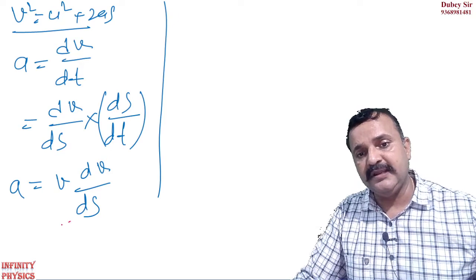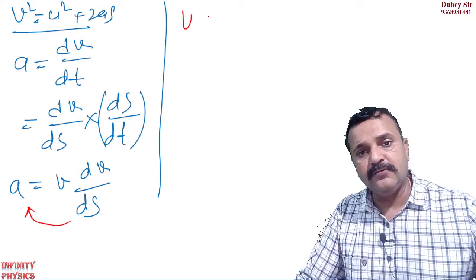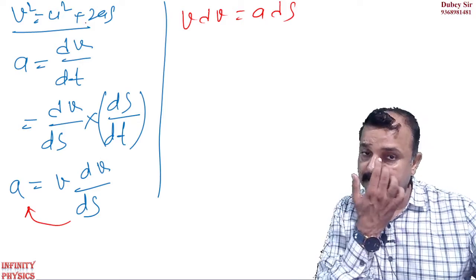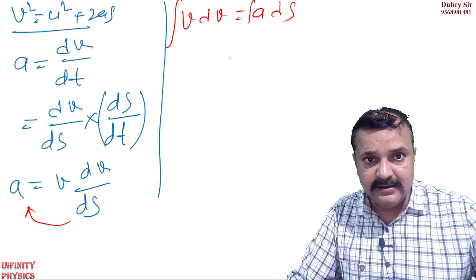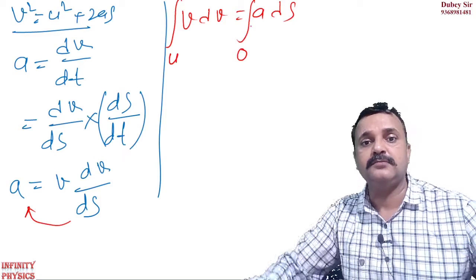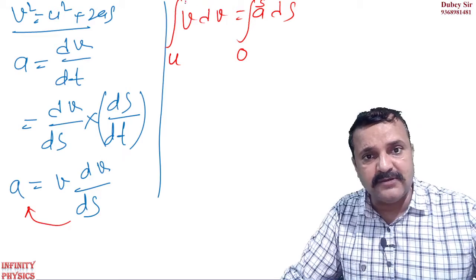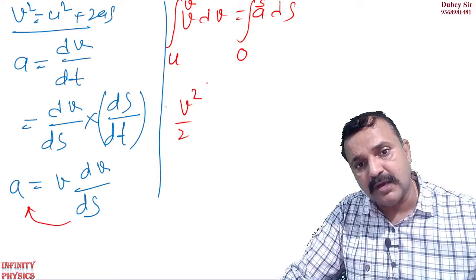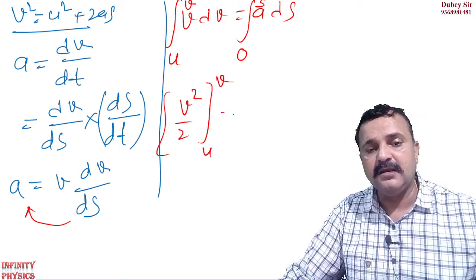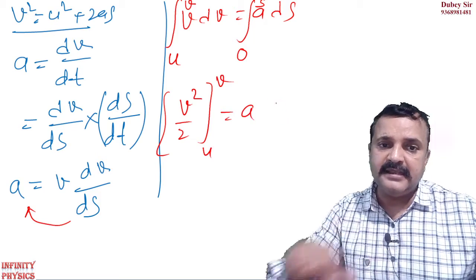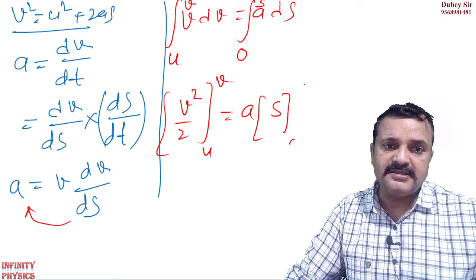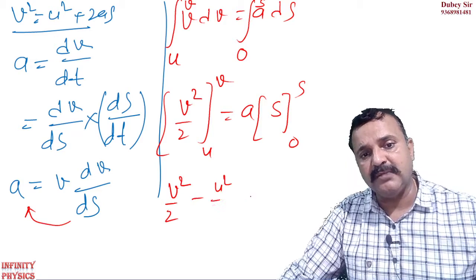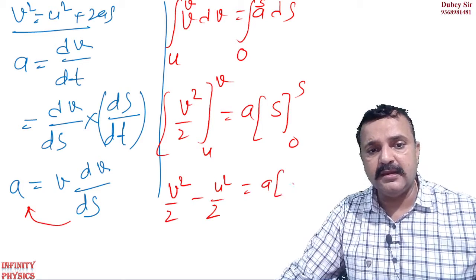Lekin ds upon dt hoota hai V. To yeh ho gaya V dv upon ds bane gaya this is your a. Toh equation koi fark bhi padega ki T gayab ho gaya. Jab T gayab ho gaya tha hamara kaam bane gaya. Yahan likho ds ko left hand side leka jao. To isse likh sakte ho V dv is equal to a ds. Haan yahna, clear hai? Isko integrate karna hai, integrate kariye. Jab displacement 0 hai to iski initial velocity kya hai U aur jab displacement s hai to iski final velocity kya hai V clear hai? To V ka integration v square by 2 haan yahna, limit kya hai? u to v is equal to a common le liya. ds ka integration kya ho jayega? s. jiski limit kya hai? 0 to s. Yahan limit put kar do. v square by 2 minus u square by 2 is equal to a s minus 0.